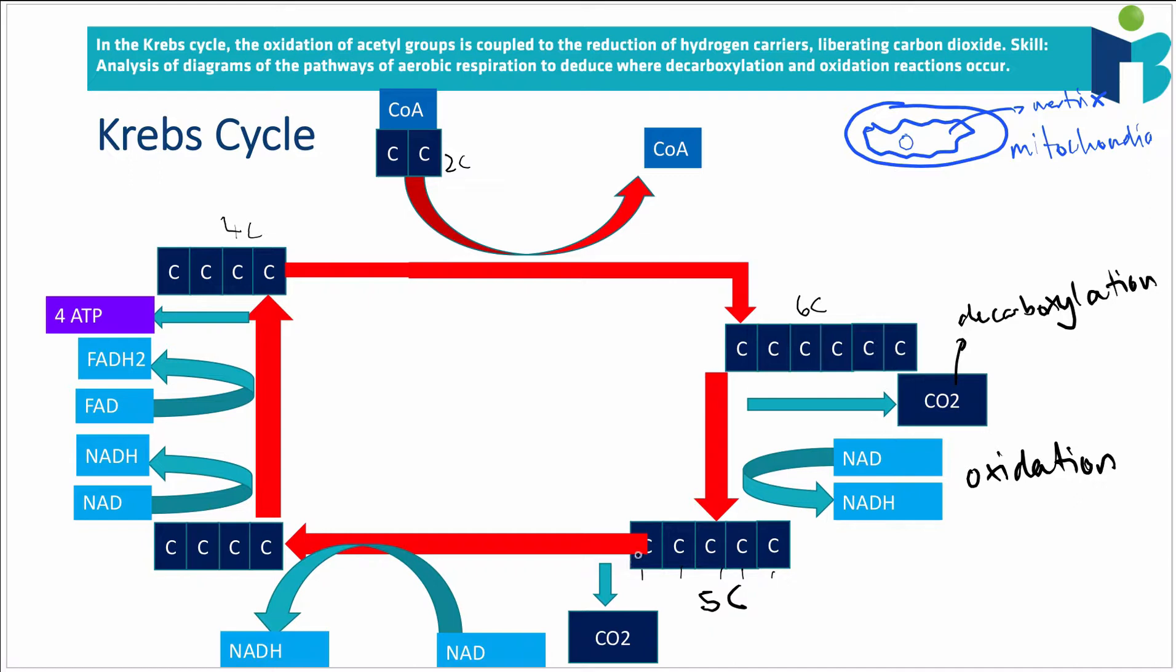This 5C molecule will then lose another carbon in another round of decarboxylation, right? Where you're hopefully starting to see a pattern here, decarboxylation. And then it's going to be oxidized to produce another reduced electron carrier. So we just have another round of oxidation.